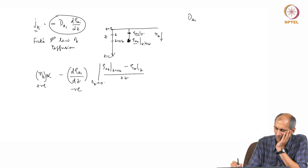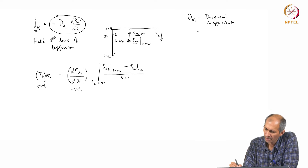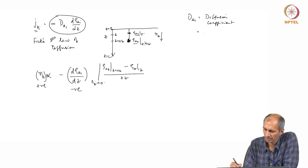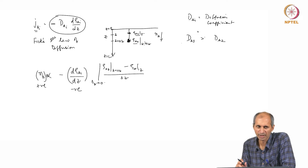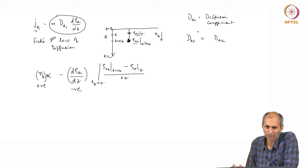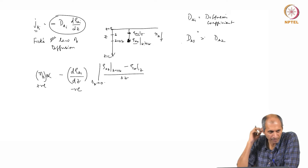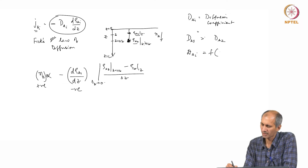The diffusion coefficient D_Ai is a proportionality constant. People have figured out what D_A is a function of. D_A1 in air is greater than D_A2 in water because there is less resistance in air. Diffusion is seen as a drag or resistance. Less resistance means more diffusion, and less resistance happens in the presence of a lighter medium. So D_Ai is a function of the density of the medium, rho_i.